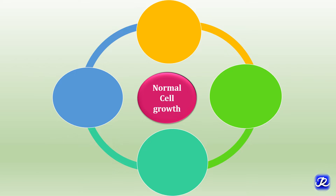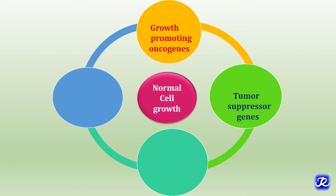Normal cell growth is under genetic control by four important regulatory genes: first, growth promoting oncogenes; second, growth inhibiting genes or tumor suppressor genes, also called anti-oncogenes; third, genes regulating apoptosis; and fourth, DNA repair genes. Abnormalities in these four genes result in carcinogenesis.